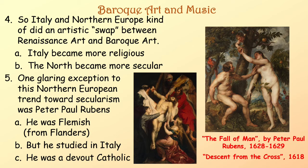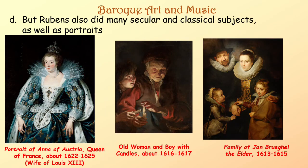One glaring exception to the Northern European trend towards secularism was Peter Paul Rubens. He was Flemish — from Flanders, roughly the northern half of modern-day Belgium — studied in Italy, and was a devout Catholic, so he had many religious themes in his paintings. However, he also did many secular and classical subjects as well as portraits.